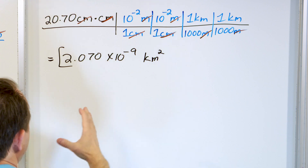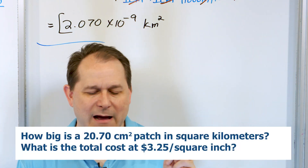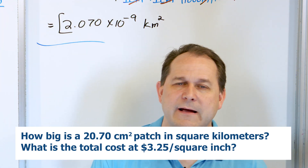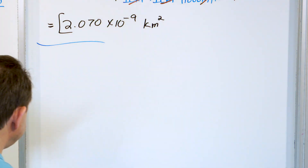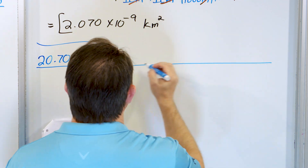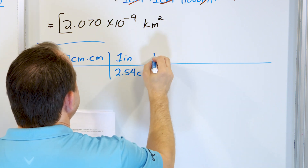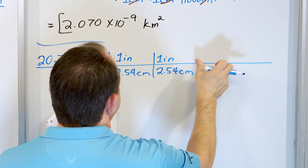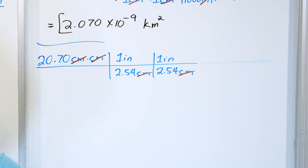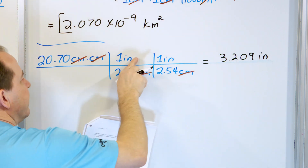Notice it's a really small number because this unit is so big, and of course the patch isn't that big on an airplane. For the cost calculation, we first need to convert to square inches. We use 20.70 centimeters times centimeters, and we know one inch is 2.54 centimeters — applied twice since we have two centimeter units. So 20.70 divided by 2.54 divided by 2.54 gives 3.209 square inches.